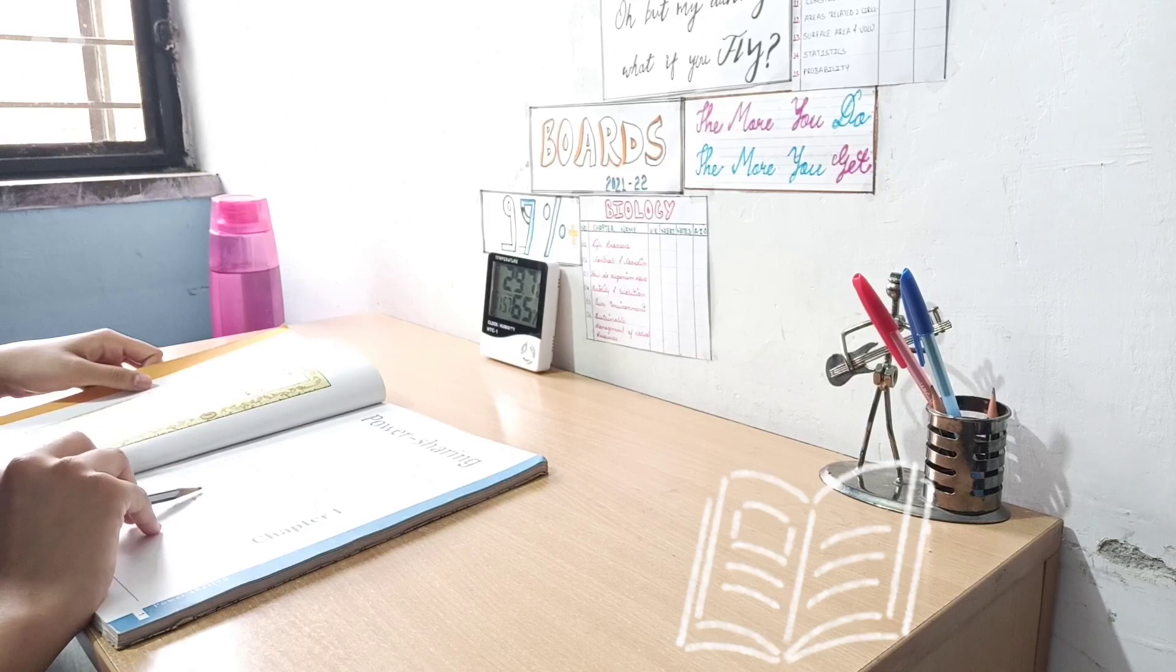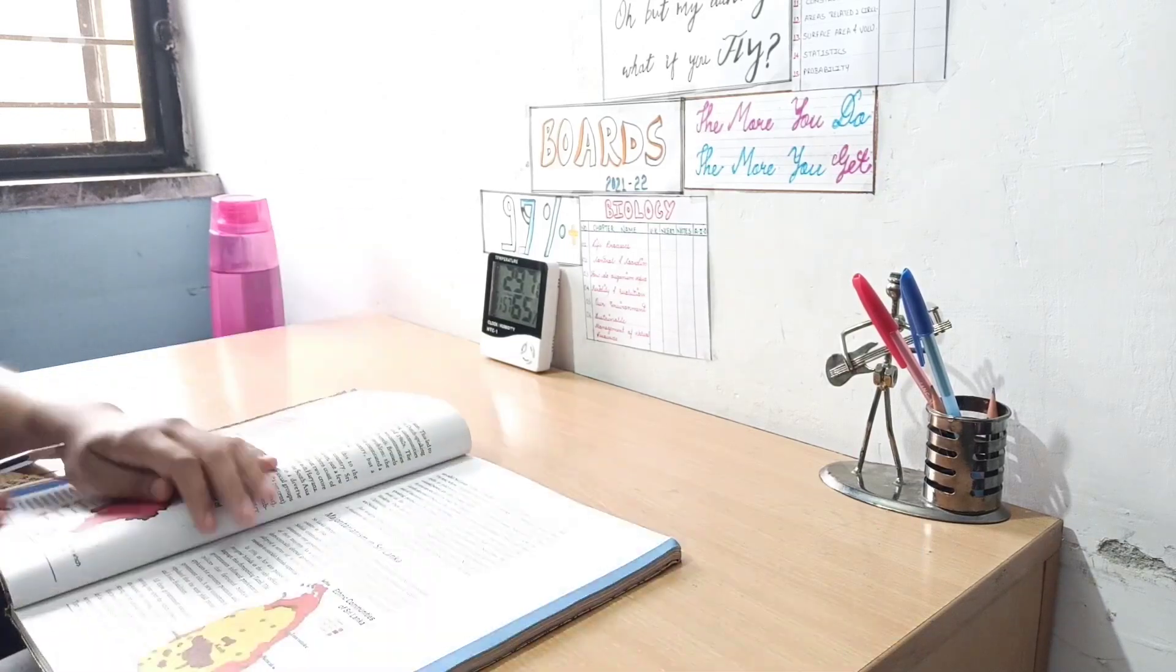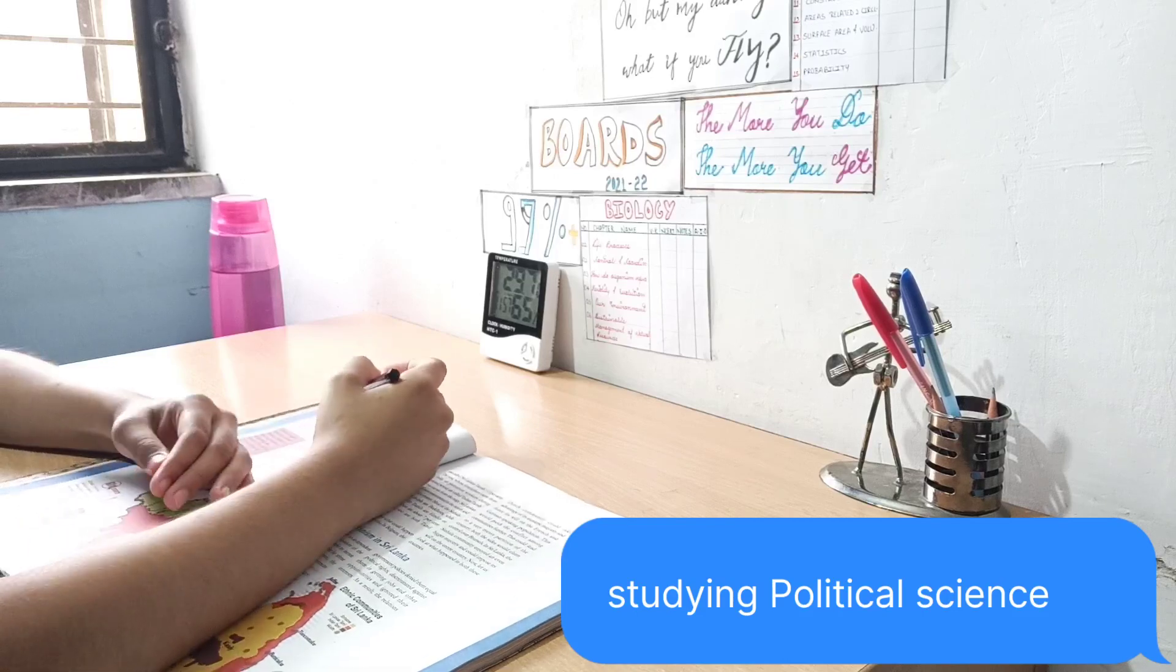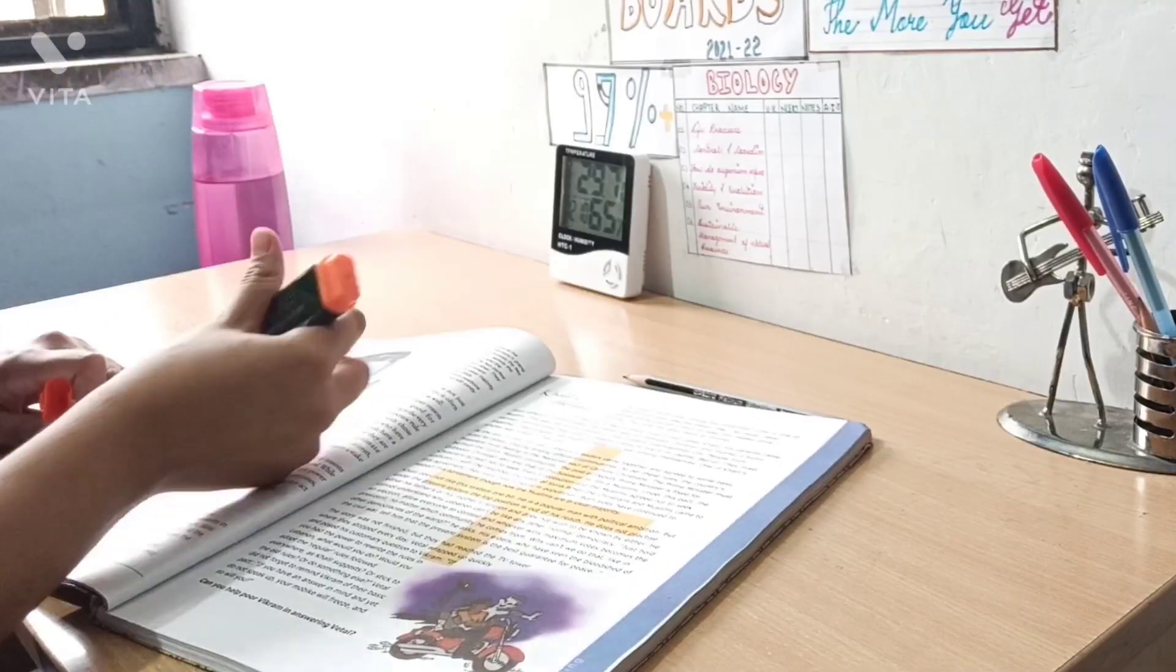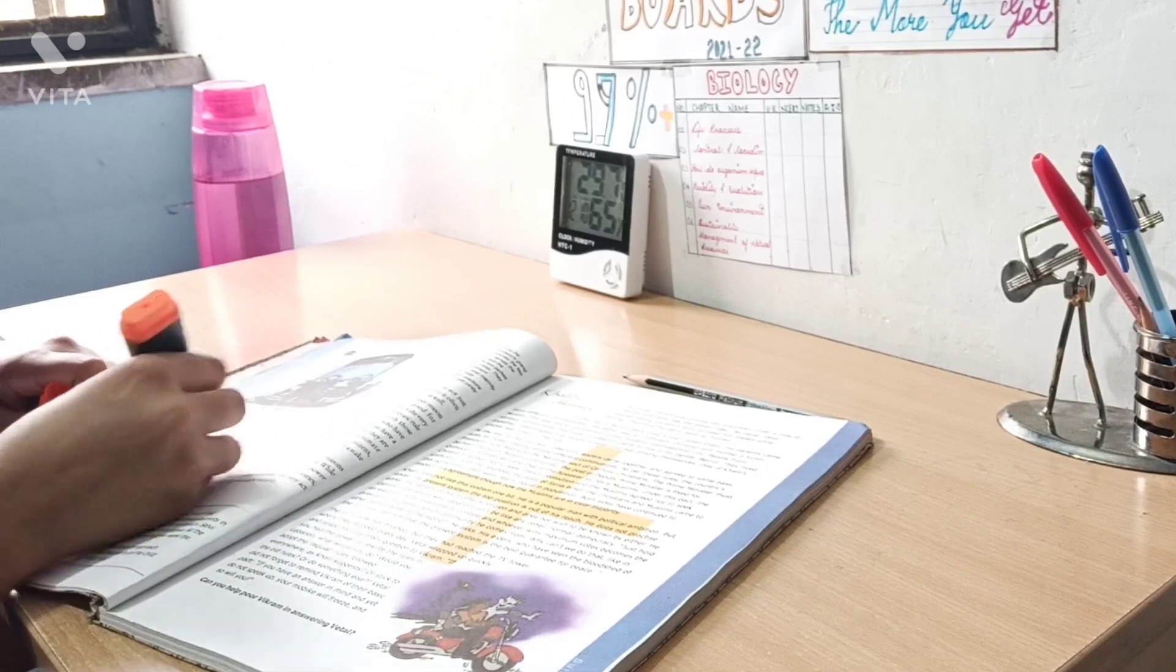So now I'm studying SST chapter 1 political science power sharing. I have already read the chapter from the private publication, but before making the notes I just wanted to read it from NCERT and highlight some important points.